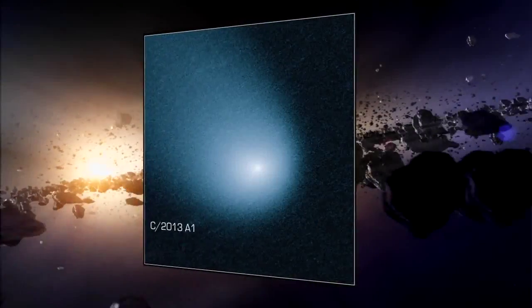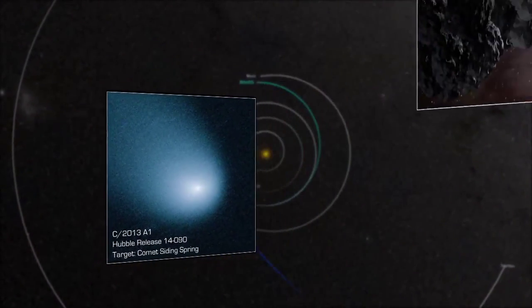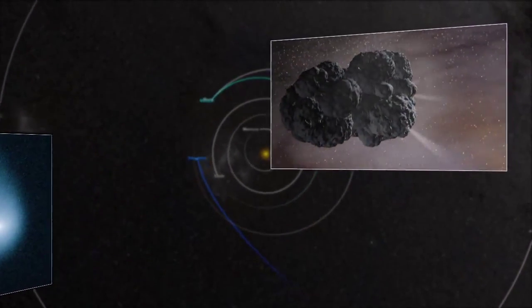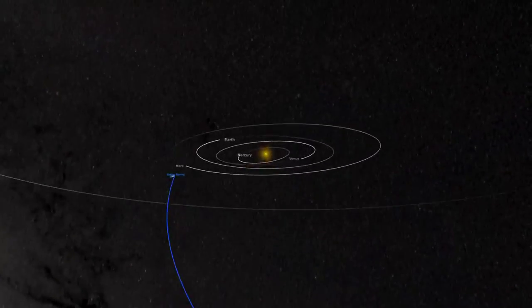Like C2013A1, better known as Comet Siding Spring. This chunk of frozen water and gas, with the estimated mass of a small mountain, left the Oort Cloud's southern hemisphere millions of years ago.